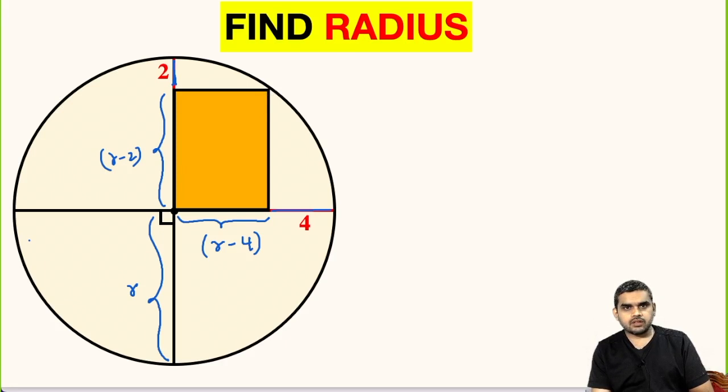Now, let us draw this line segment. Here this will be r. This will be r minus 2. This is 90 degrees.